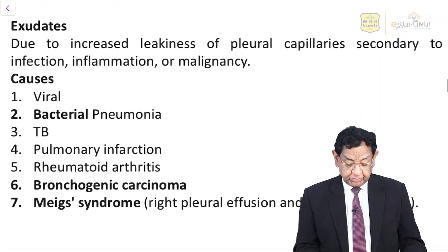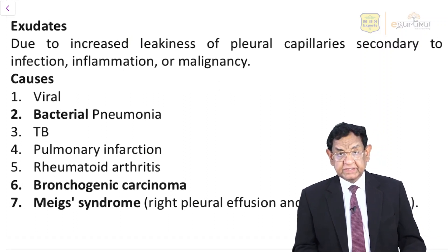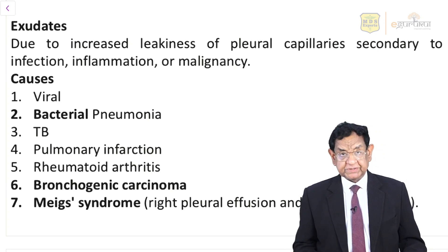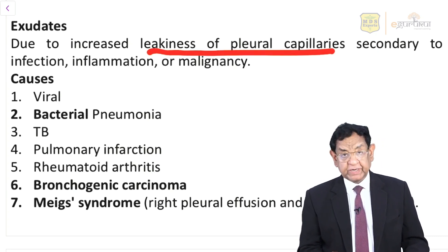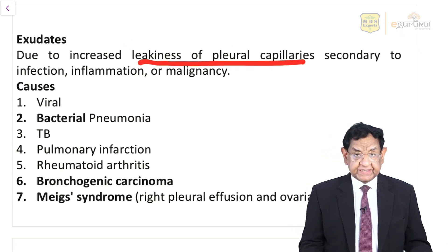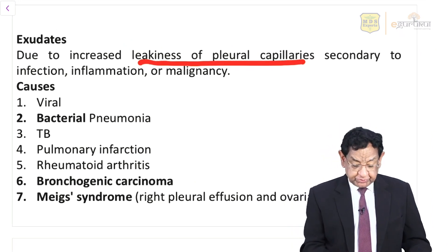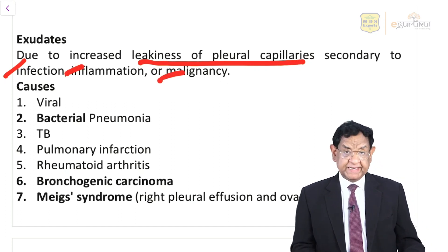Now we talk about exudate, where the pleural fluid protein is more than 3 gram percent. This is due to increased leakiness of the pleural capillaries, and this increased leakiness could be due to any cause of infection, inflammation, or malignancy.